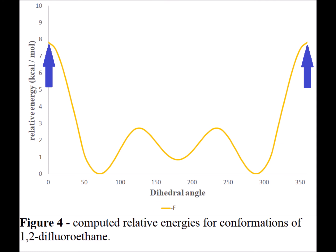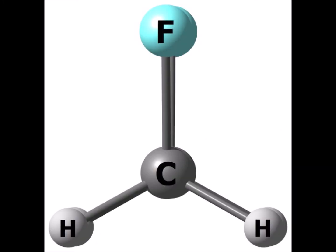In a very similar manner to the 1,2-dichloro and 1,2-dibromoethane, for 1,2-difluoroethane there is a single global maximum which occurs at a dihedral angle of 0 degrees, corresponding to the fully eclipsed conformation of the molecule. The geometry optimized structure for the fully eclipsed conformation of 1,2-difluoroethane represents the global maximum for the molecule.